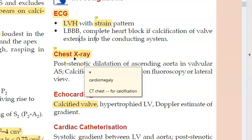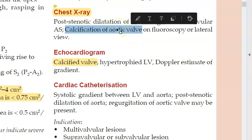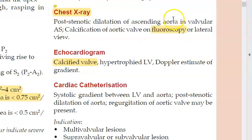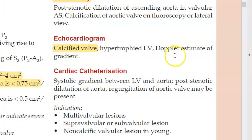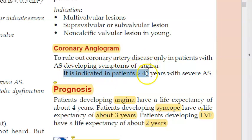On chest X-ray, you will see cardiomegaly with left ventricular hypertrophy and possibly left atrial enlargement. There can also be calcification of the aortic valve, which is better seen on CT chest or fluoroscopy. On echocardiogram, you can see a calcified valve and hypertrophied left ventricle. Coronary angiogram is done to rule out coronary artery disease, especially in patients older than 45.